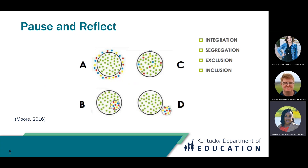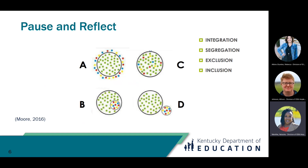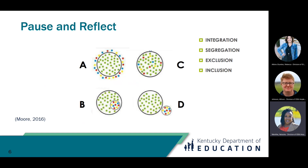Let's pause and reflect. Looking at the diagram on the screen, we have four models for a classroom and four labels: integration, segregation, exclusion, and inclusion. Take some time to look at each model and determine which model best matches the label. For classroom model A, this is a representation of exclusion. All the green dots are in the circle and all the red, yellow, and blue dots are outside of the circle, representing an exclusion model of co-teaching.